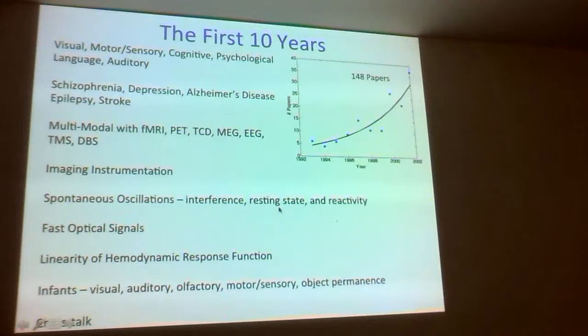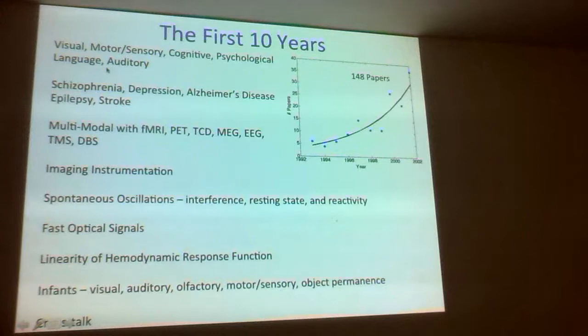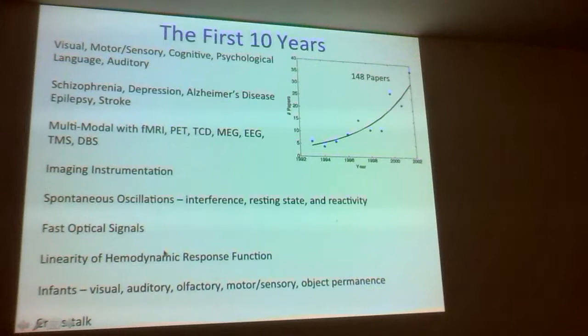Visual stimuli, motor stimuli, sensory stimuli, psychological language stimuli, cognitive tasks, auditory tasks — there were already papers looking at many different neuro-related diseases. There were already many papers with multi-modal combinations of fNIRS with fMRI and PET. Lots of instrumentation, fast optical signals looking at neuronal activity. It was amazing how much had already been covered, even studies in infants.